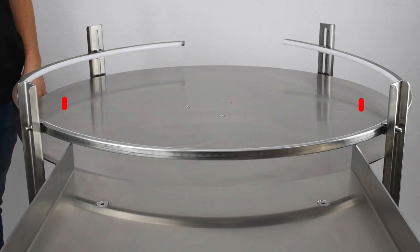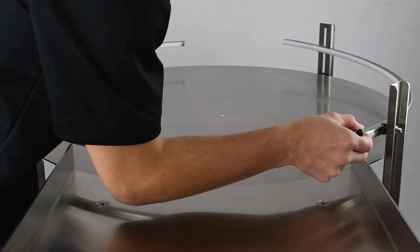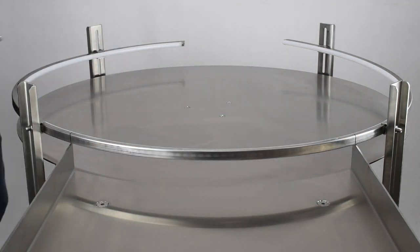We now need to cut an opening here to allow containers to pass back and forth from infeed table to accumulation table. Mark at the points where the table guide rail intersects with the infeed attachment, as shown here. Once the marks have been made,